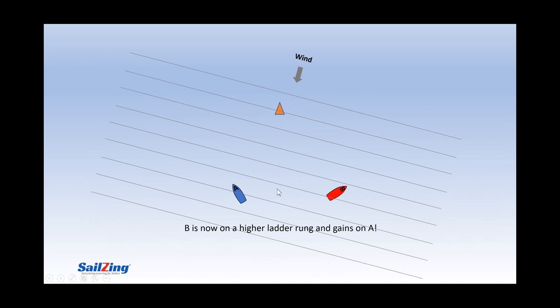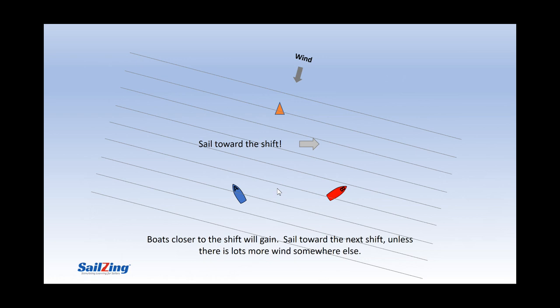It doesn't matter where the mark is unless one of the boats sails past the lay line. This shows us that boats closer to the shift will gain, so we always try to sail toward the next shift unless there is way more wind somewhere else.